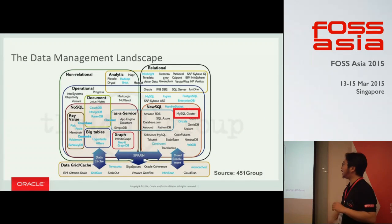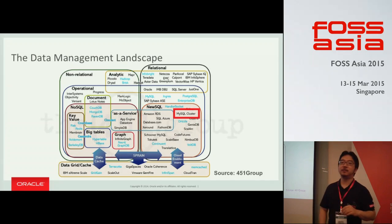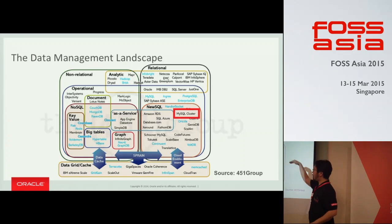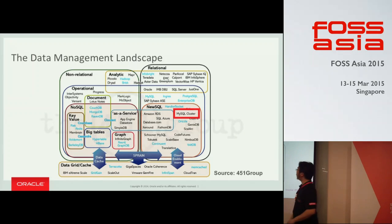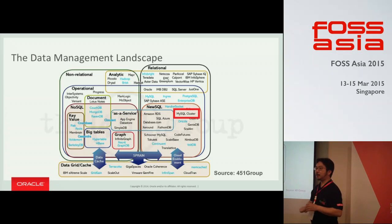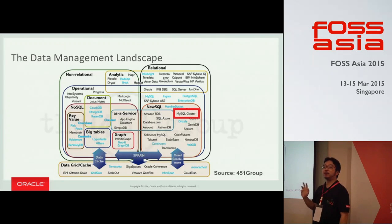Some of you may have seen this diagram released by the 451 Group research firm. There are many different types of database and data management solutions, split into several categories. For example, MySQL Server is recognized as a relational and operational database — operational meaning more like OLTP operations. Another popular solution nowadays is Hadoop. Hadoop is usually recognized as NoSQL.